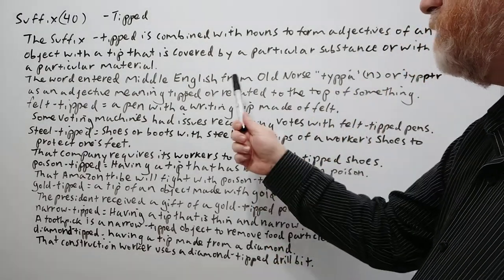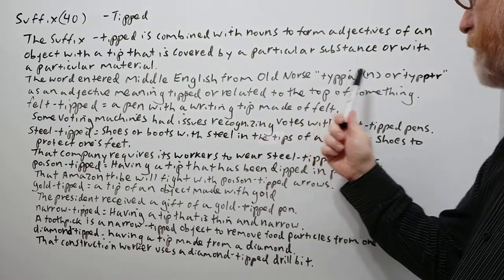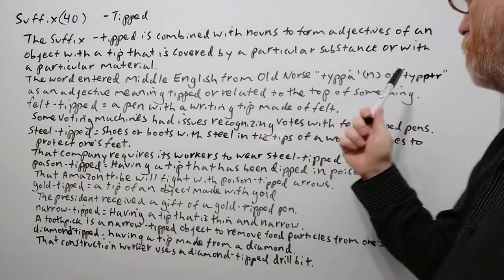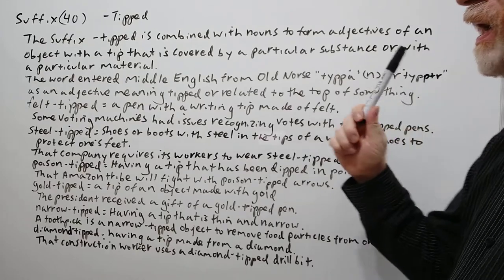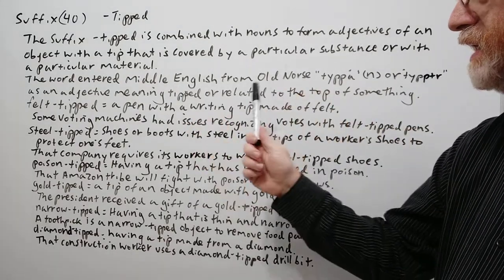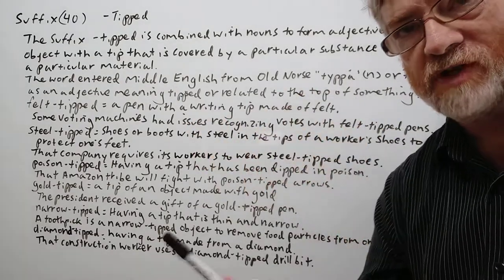The word entered Middle English from Old Norse tipa as a noun or tip return as an adjective meaning tipped or related to the top of something.